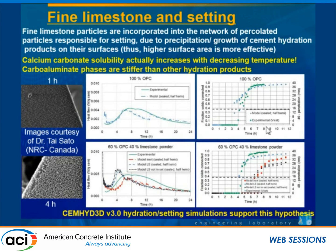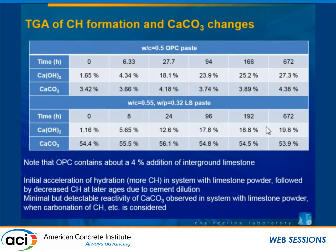We have images showing what we think is happening — hydration products forming on limestone grain surfaces, then growing over time. We can do thermogravimetric analysis to validate these simulation results. In a 0.5 water-cement ratio OPC paste versus a 0.55 water-cement ratio limestone paste, we monitor calcium hydroxide and calcium carbonate formation over time. In the limestone system, we see more calcium hydroxide formation indicative of the accelerating effect, and calcite formation remains stable then begins to reduce after about 24 hours, suggesting that calcium carbonate is being consumed in the system.